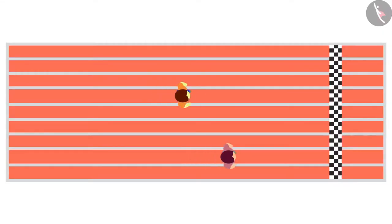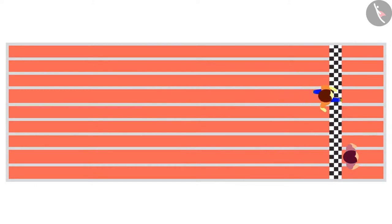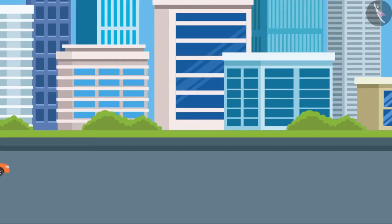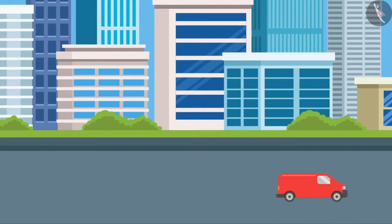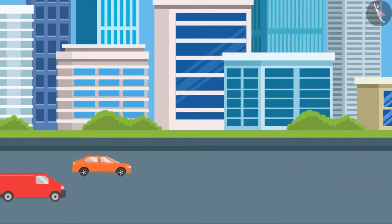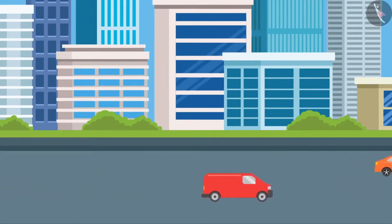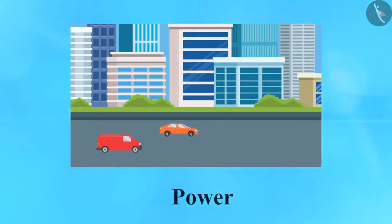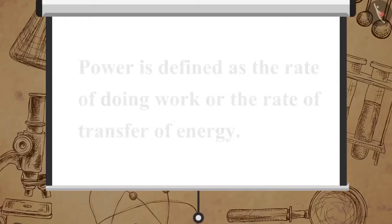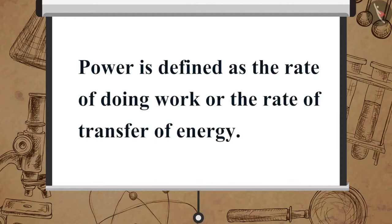A stronger person can do a certain amount of work in relatively less time. Similarly, a more powerful car can cover more distance in a short period of time than a less powerful car. These cars are classified according to their rate of doing work, and power measures this rate at which work is being done. Thus power is defined as the rate of doing work or the rate of transfer of energy.